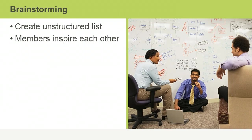Brainstorming is a great way to generate an unstructured list of possible project requirements, because it encourages everyone in a group to have their say. What one person says often inspires someone else with a new idea. You record all the ideas stakeholders come up with so no good ideas are lost, and nobody criticizes other people's ideas, to encourage participation.